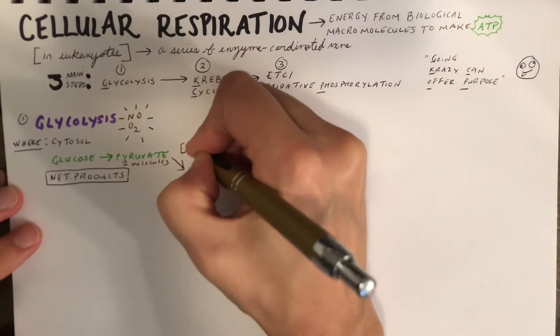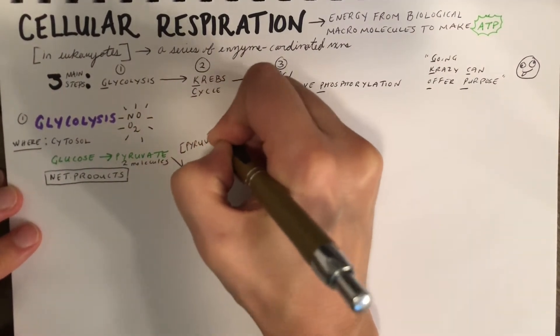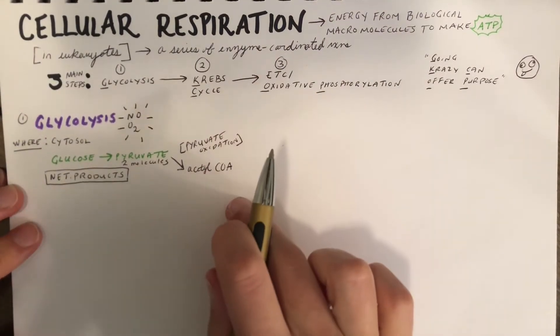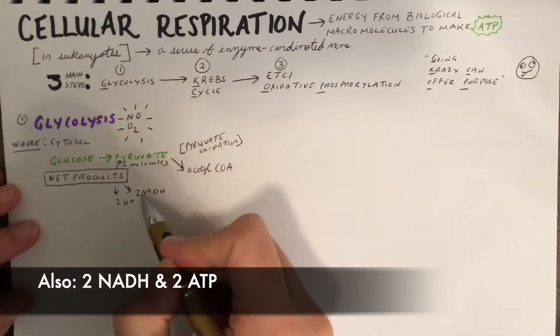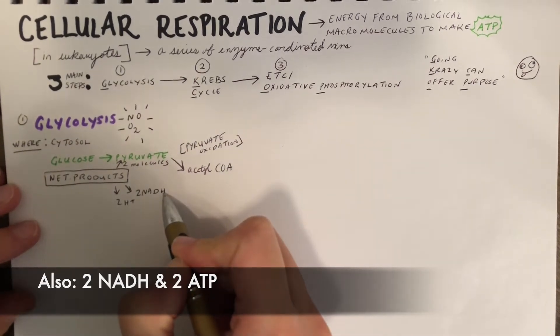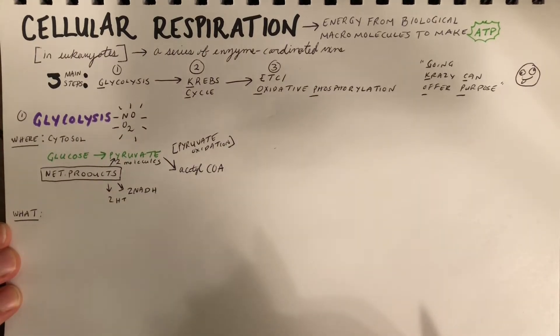That's called pyruvate oxidation. And it'll happen before these molecules enter the Krebs cycle. We'll also get 2-NADH, which will help us take electrons to the electron transfer chain later on. It's important to remember again that glycolysis is the catabolism of glucose.